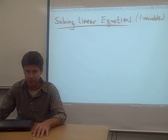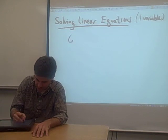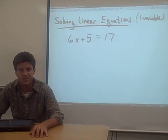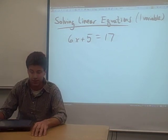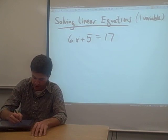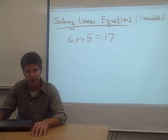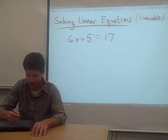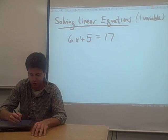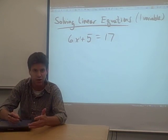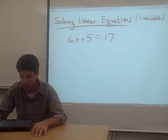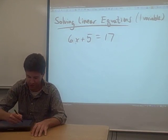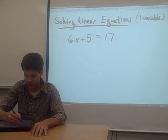An example of a linear equation with one variable would be something like this: 6x plus 5 equals 17, and you need to solve for x. This is a linear equation because all the powers on your x's, you just have one x in this problem, the power on that x is 1. There's no square on the x or cube on the x or anything like that. It's one variable because the only variable in the problem is x. Everything else is a number.